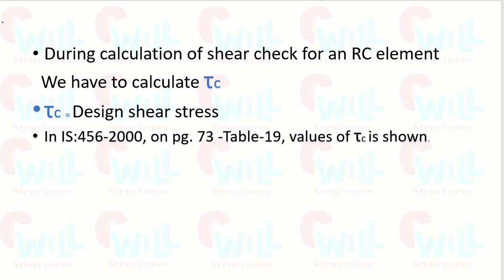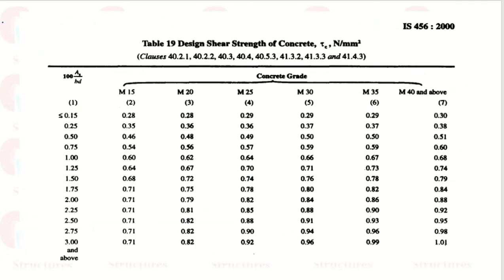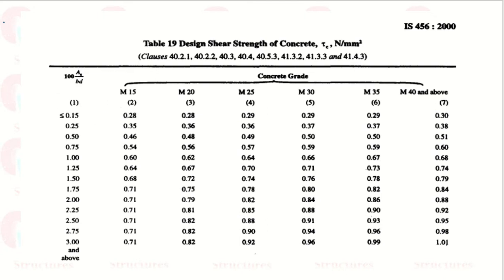Here is Table number 19 of IS 456:2000 where you can determine your value of tau c. The value of tau c depends upon the grade of concrete — you can see the columns for the grade of concrete. The rows depend upon the percentage of reinforcement. The formula 100·Ast / (B·D) is nothing but the formula for PT. This table determines the design shear strength of concrete, which is tau c.